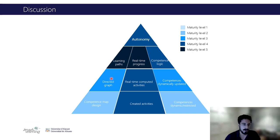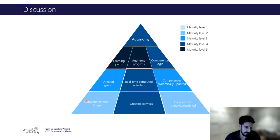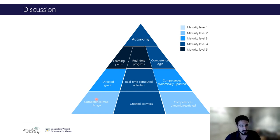Then, directed graph — that is how the platform implements this principle for allowing the students to use different learning paths. But we have here that the course design, represented by the competence map design, is not completely fulfilled. Indeed, this is at a low maturity level, so we should work to improve this part.